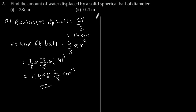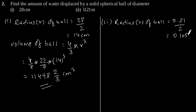Now solving for the second part, given diameter is 0.21. So radius r of ball will be 0.21 divided by 2 which is equal to 0.105 meter.